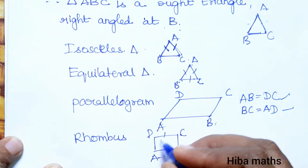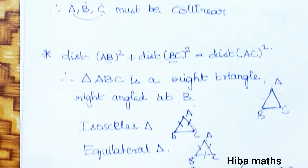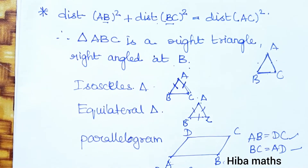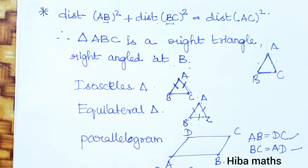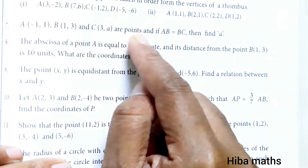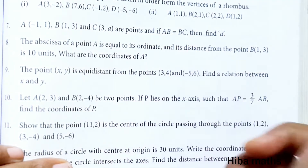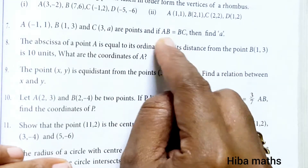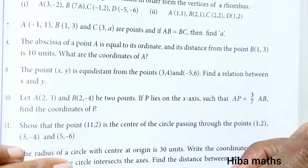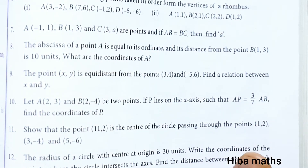All sides will be equal and we confirm. Next, in another type of question we have two sides equal to an unknown value. For example, if AB equals BC, then we calculate the AB distance and BC distance and set them equal, then solve for the unknown value using the distance formula.